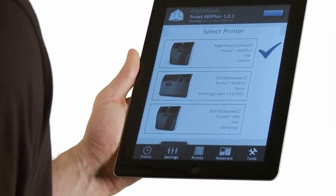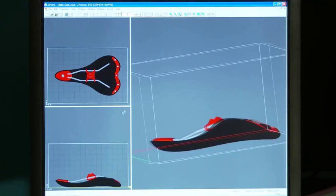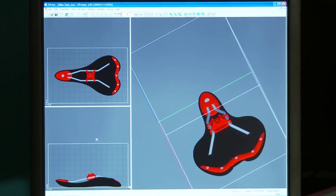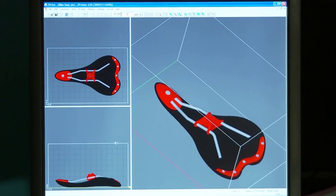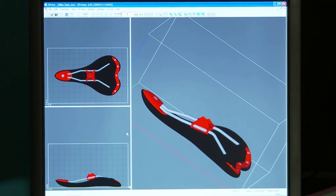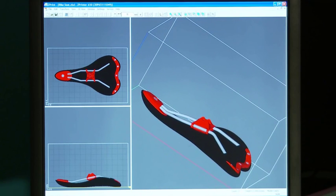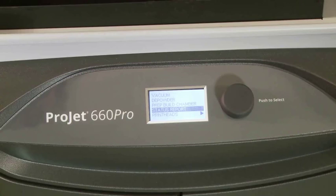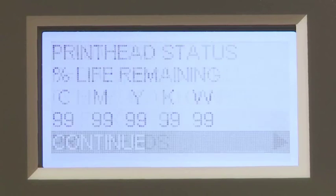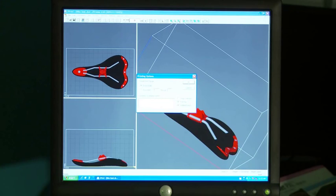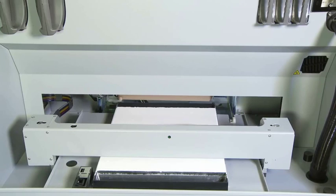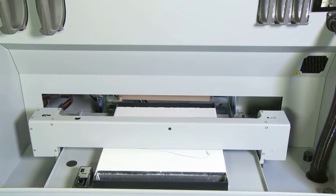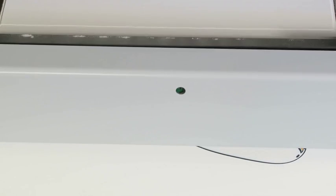The new ProJet X60 printers also expand your flexibility with the new mobile controls, letting you monitor your printer from virtually anywhere. Having a 3D printed model in your hands the same day is easier than ever. Simply load the 3D data into the 3D print software on your PC, and the system will automatically check for the material supplies and printer readiness. When ready, just click print, and watch as the part builds from the bottom up, layer by layer, one cross-section at a time.